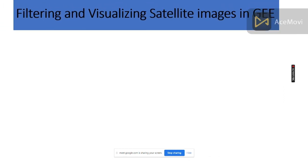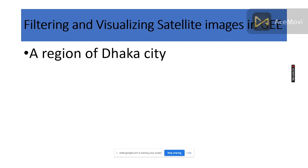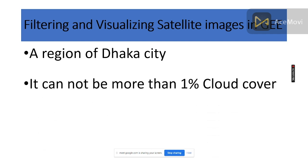Let's start with filtering and visualizing satellite images in Google Earth Engine. Whether it's Landsat or Sentinel, the filtering process depends on three factors. The first factor is your region — for example, a region of Ukraine, Dhaka city, or any boundary you need. You import your boundary shapefile into Google Earth Engine to set your region.